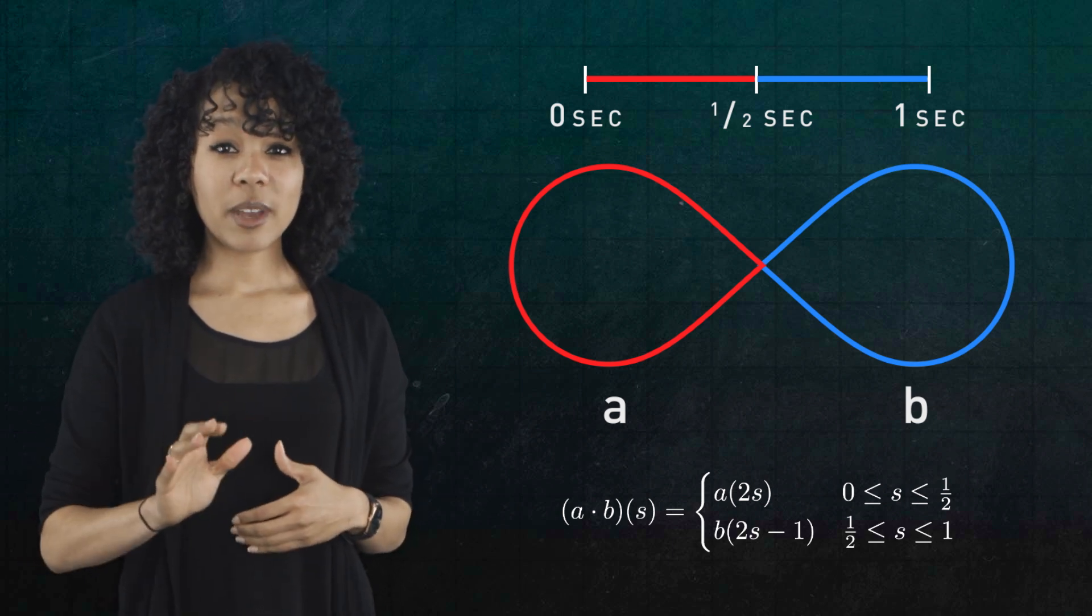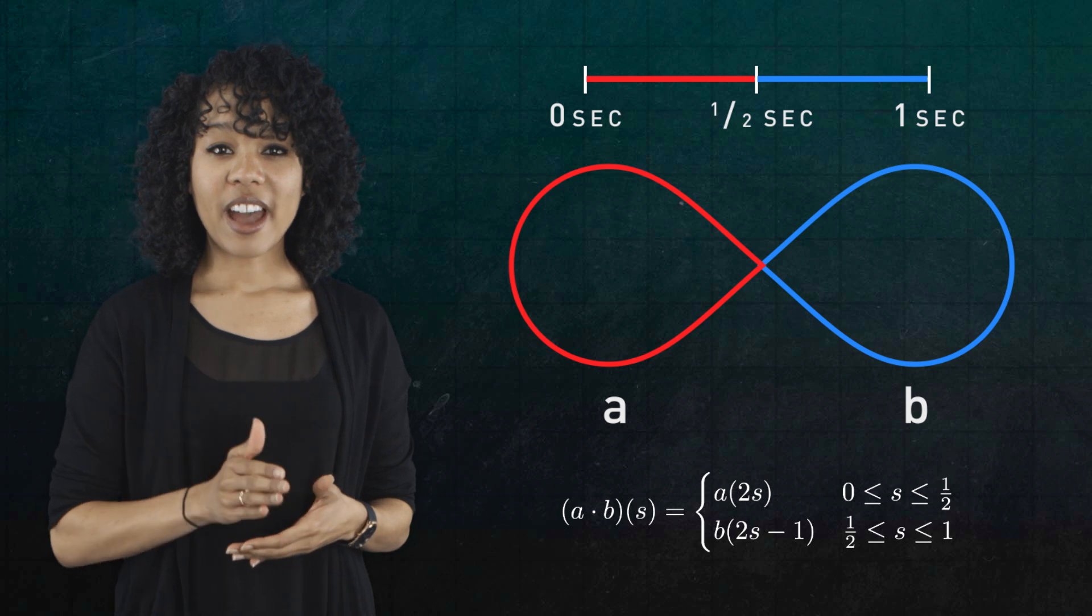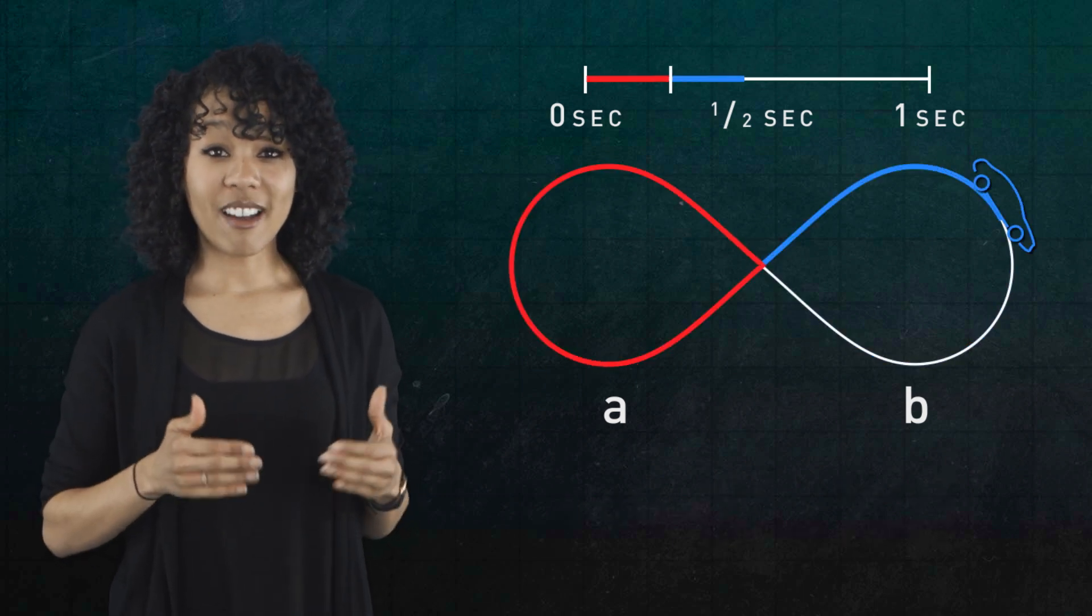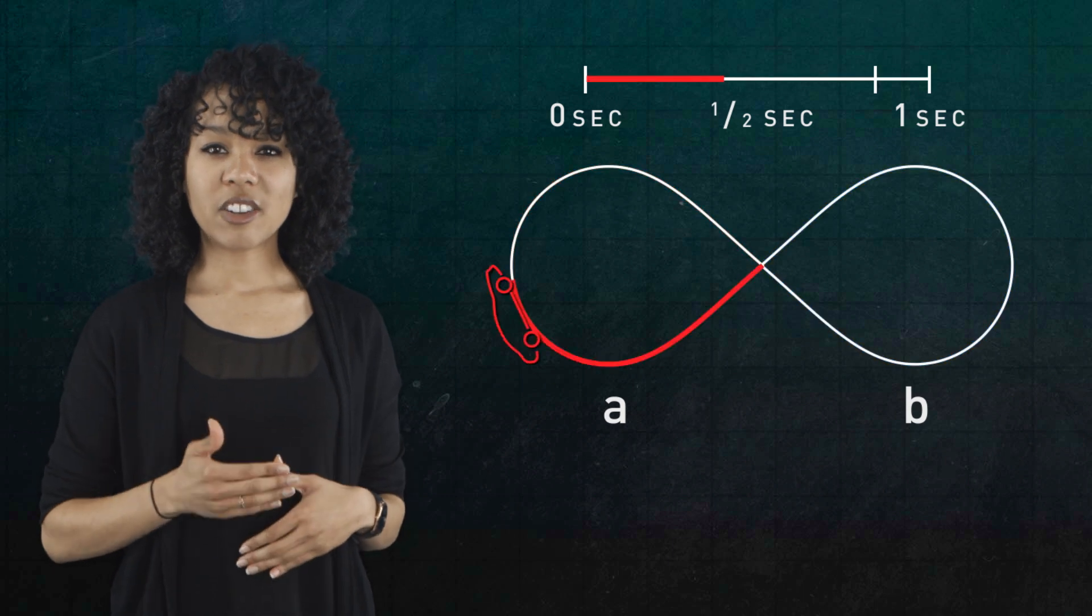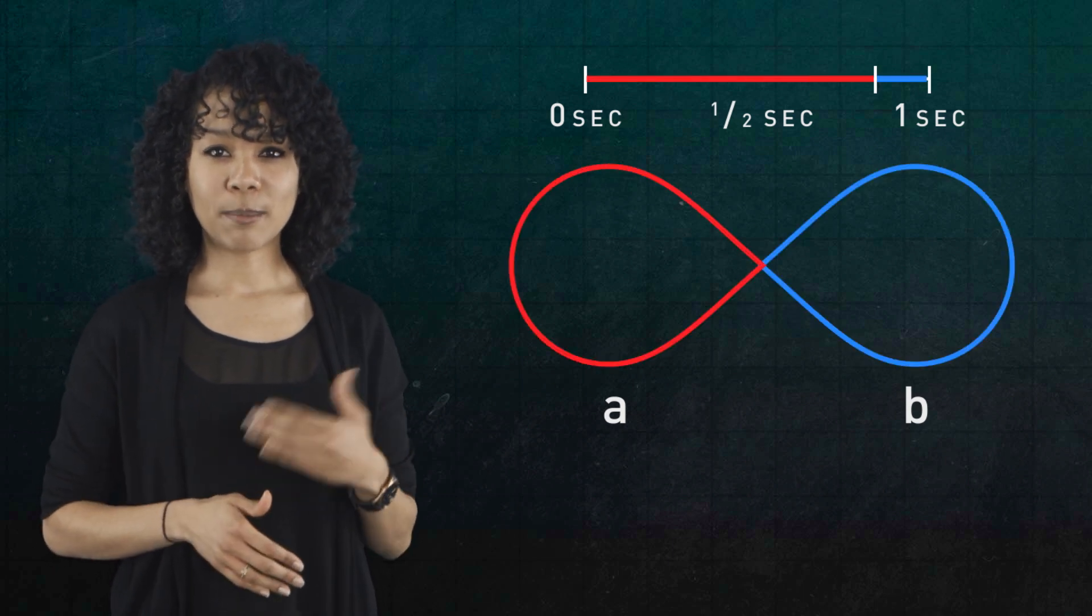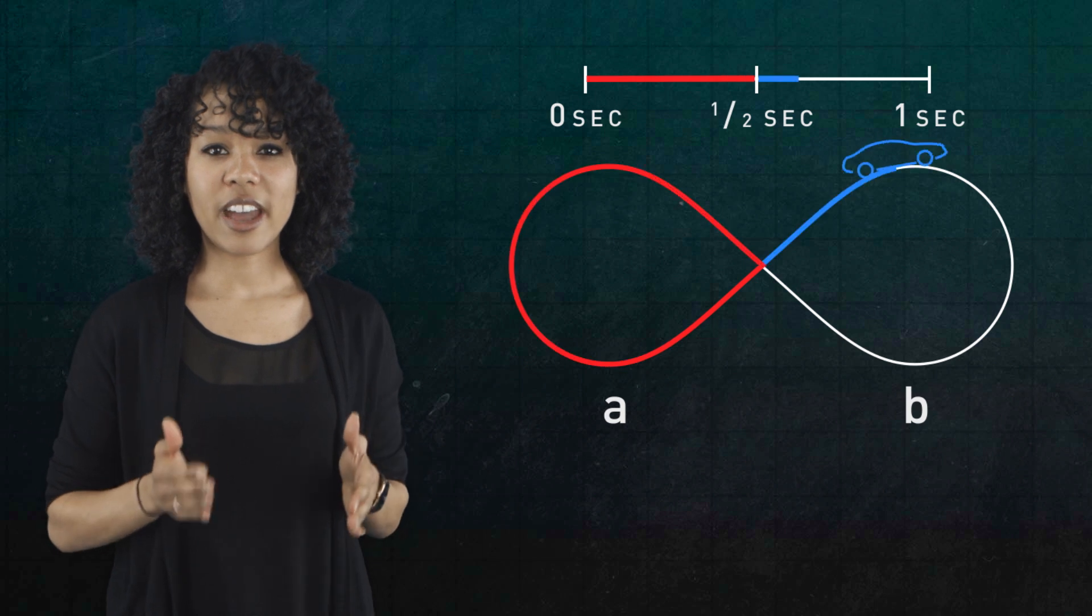Now, we didn't have to define it this way. Instead of dividing the interval in half, we could have sliced it in infinitely many other ways and defined that to be the multiplication instruction. Go around A during the red interval and go around B during the blue interval. But let's just choose to split the interval in half.